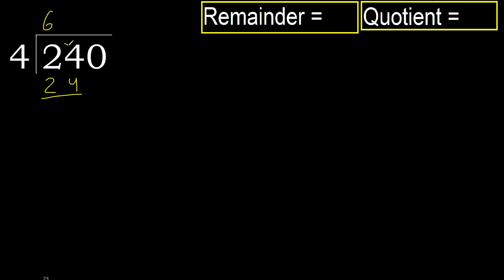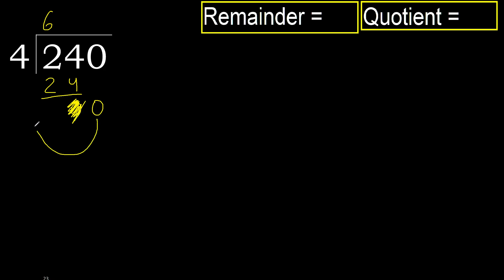24 minus 24 is 0. Next — eliminate the 0 on this side. 0 is less, therefore next.